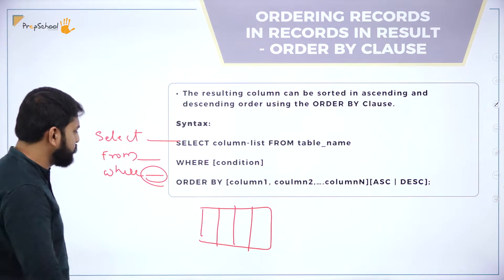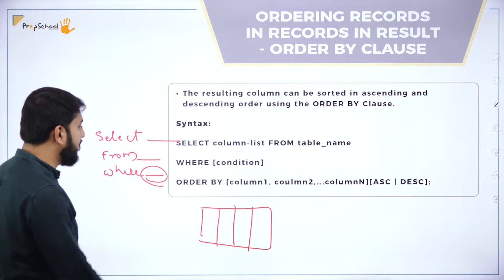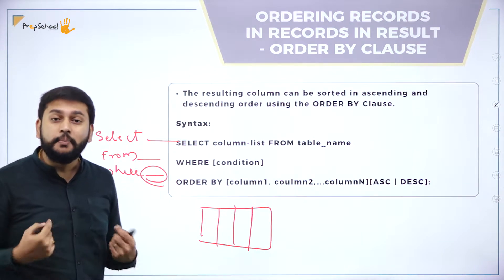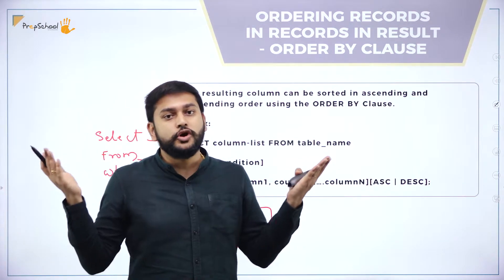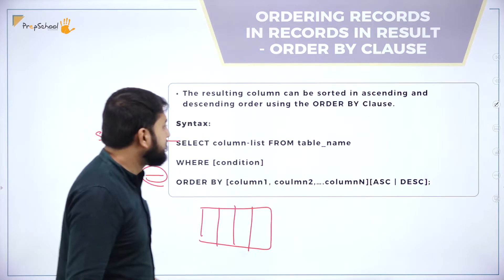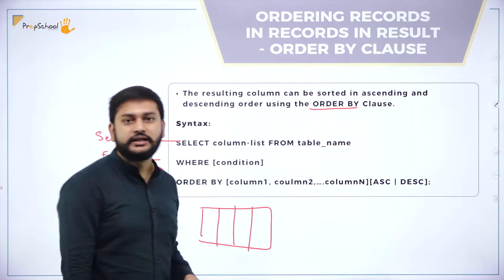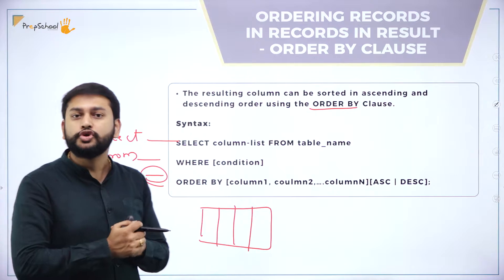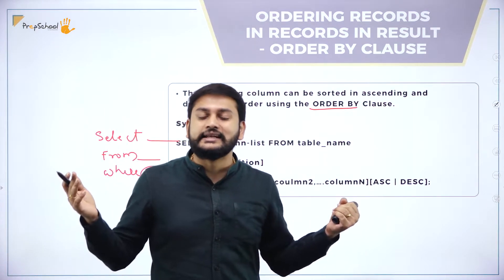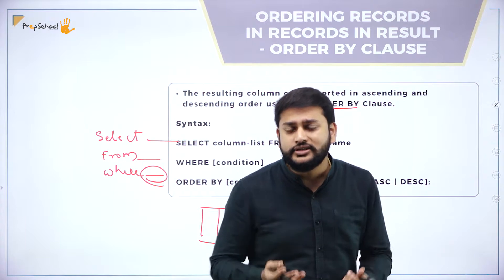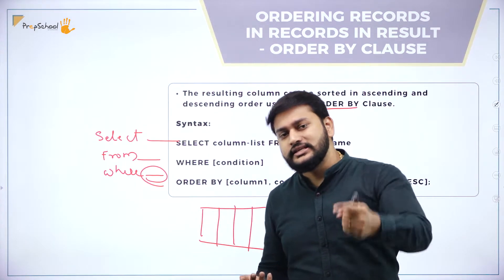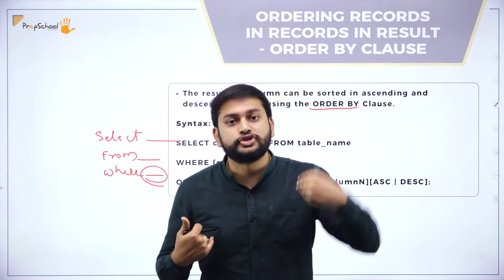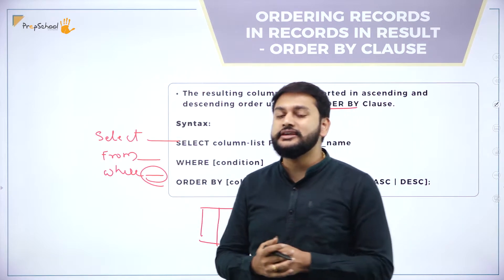The WHERE clause helps when there is any condition — it allows me to select particular rows. Apart from these, I have one more clause: the ORDER BY clause, which will help me to sort the data in either ascending or descending order.